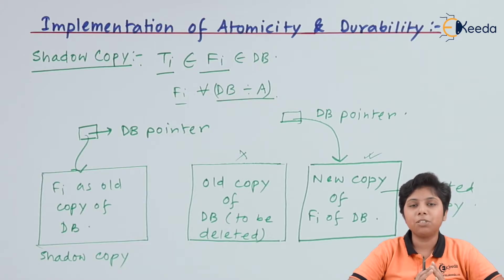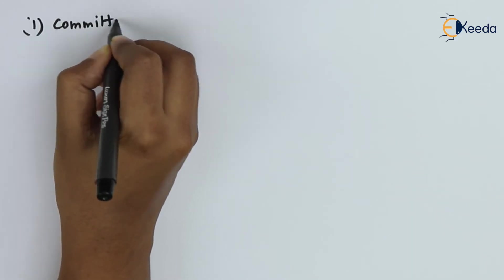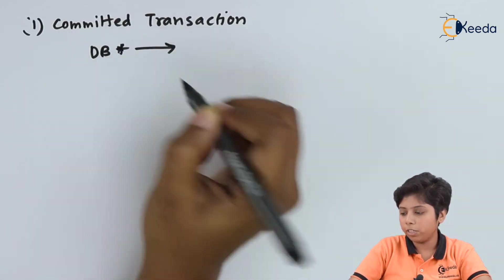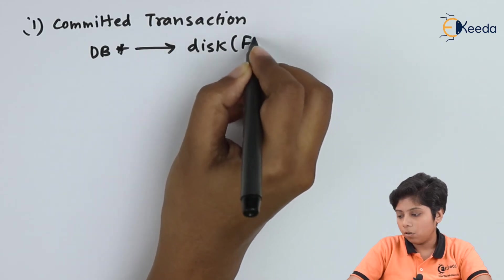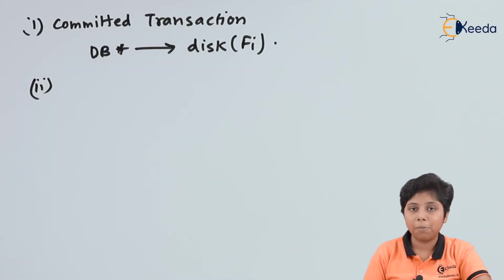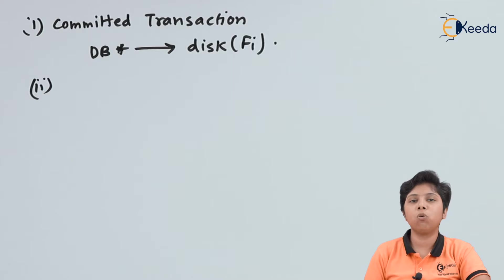Let us describe the transaction elaborately for three cases using the DB pointer. Case 1: the transaction is committed — the DB pointer will point to the disk where Fi resides with the updated copy. Case 2: the transaction has started but cannot commit its operation — the DB pointer will point to the shadow copy, which is the old copy of the database.